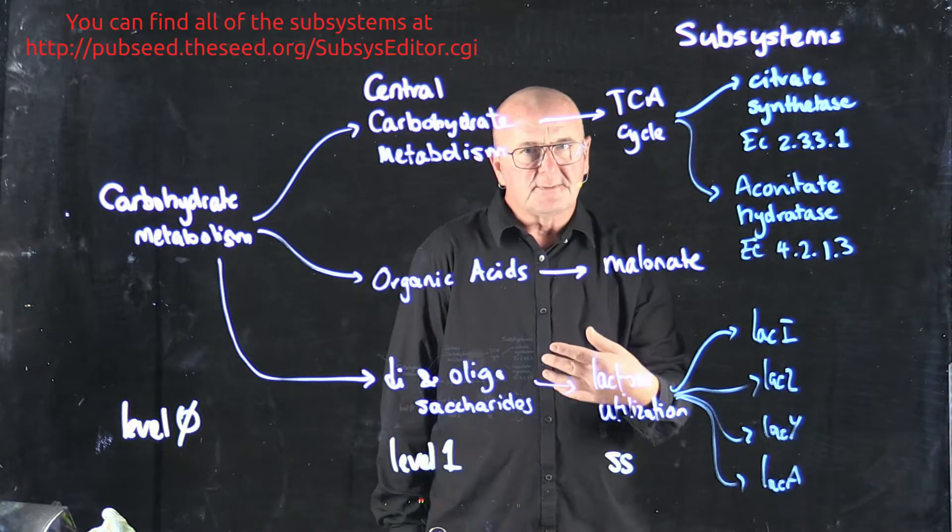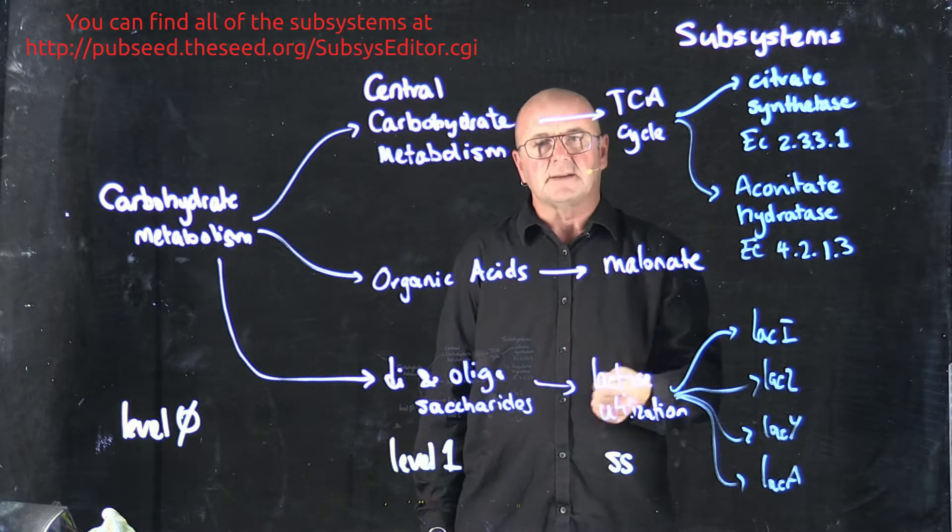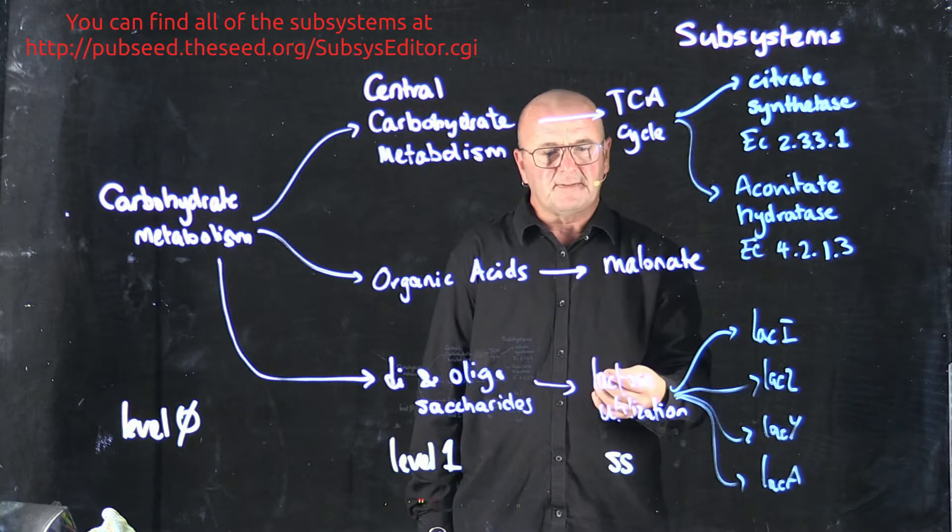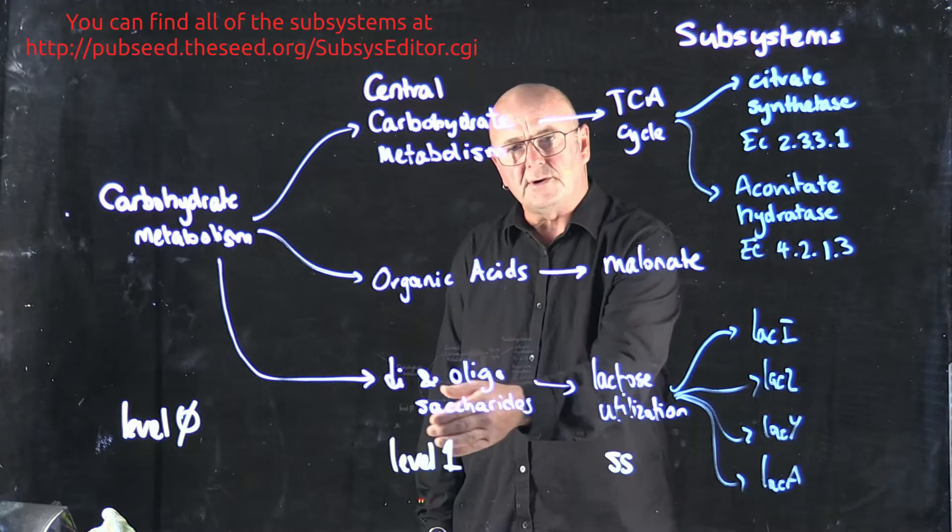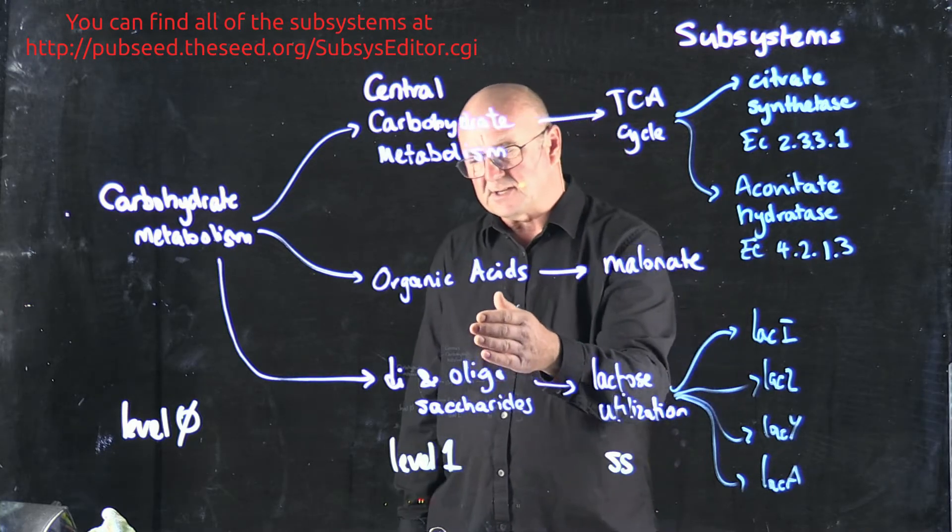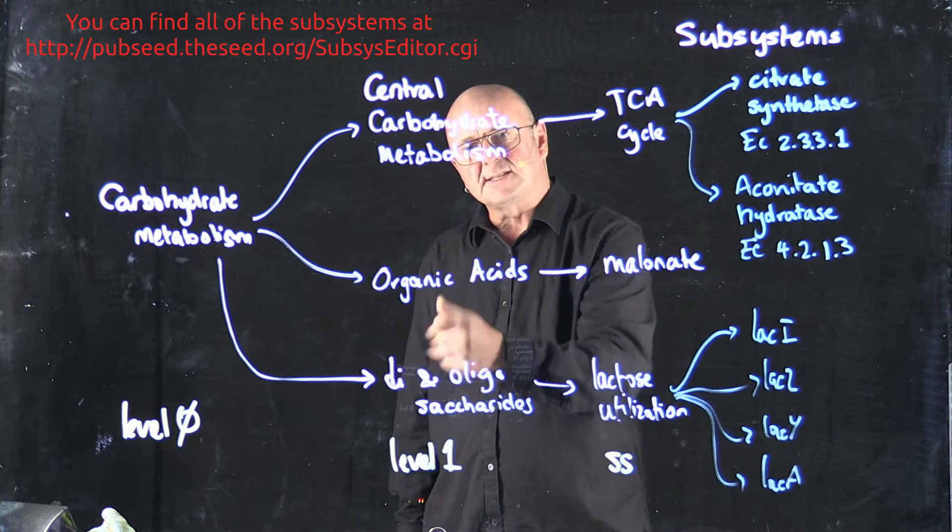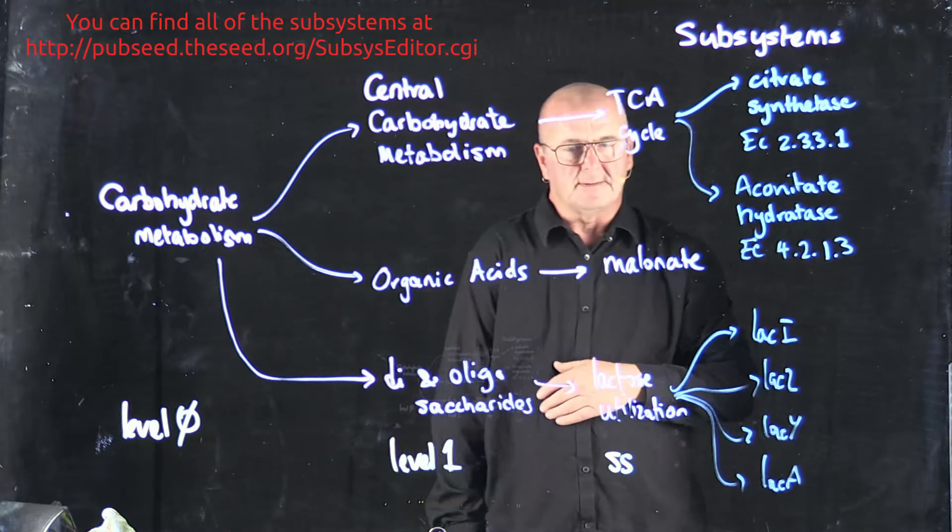In computer science, we usually have much more complex hierarchies, typically using something like a directed acyclic graph, where lactose utilization could belong to one or more of the upper-level classifications. And likewise, diene oligosaccharides could belong to one or more of the upper-level classifications.